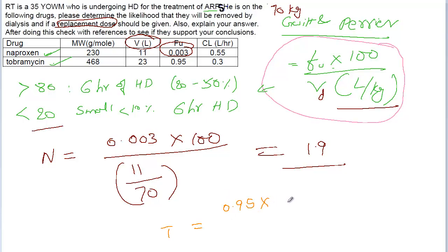The bound fraction is very less. The protein binding is very less here. 0.95 times 100 divided by volume of distribution is 23 divided by 70 kilograms.